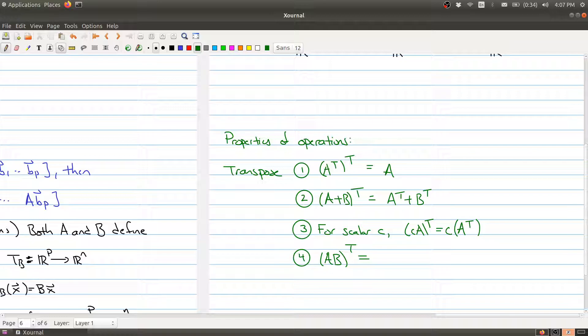And then, how does the transpose interact with the matrix multiplication? Now, this is the one you have to pay attention to. This is equal to B transpose A transpose. Okay, so pay attention to this here that the order reverses.